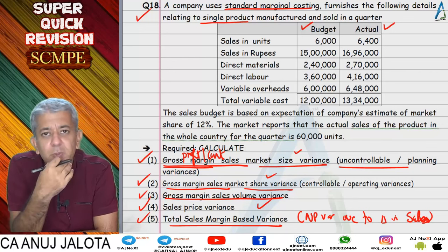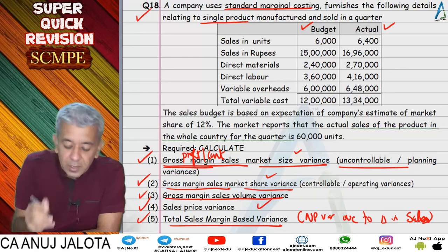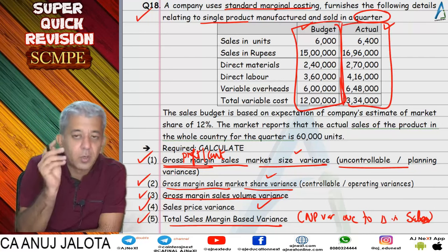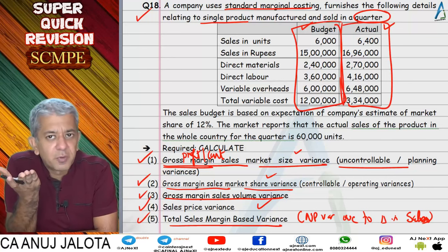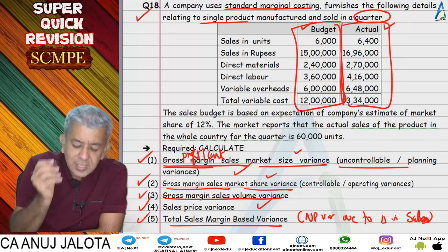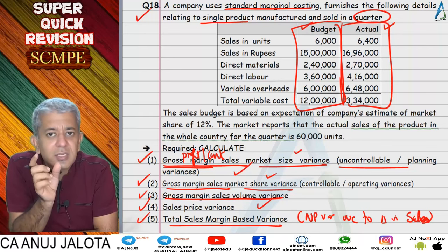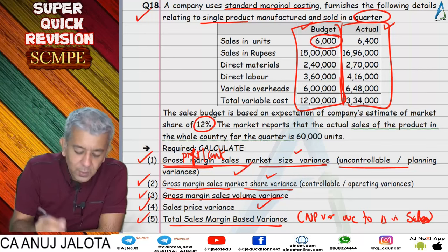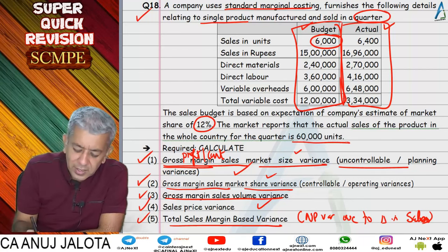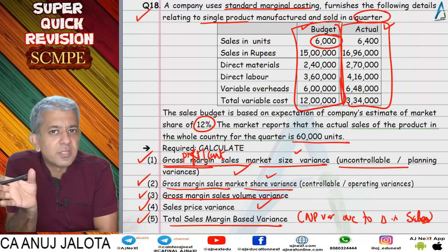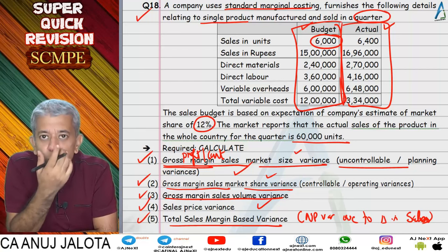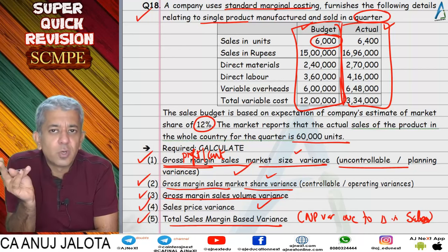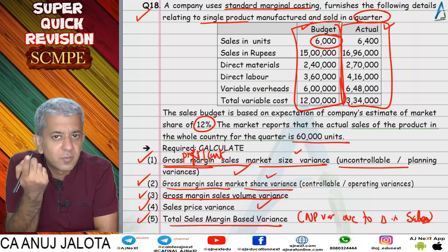We arrange the data into a standard format. Profit variances are dependent upon period — in this question the period was one quarter. For market size variance: we thought we'd sell 6,000 units divided by 12%, so market size should have been 50,000. In reality it was 60,000, so there was an increase of 10,000 in market size. Multiply by standard share of 12% and then by standard weighted average contribution per unit — which for a single product is just standard contribution per unit.